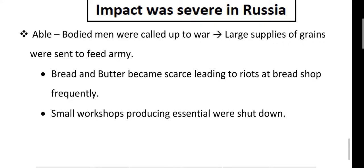Small workshops producing essential spares shut down due to the shortage of labour. This led to the disintegration of industries, and the condition of the Russian economy became worse. In summary, this was the impact of the First World War on the Russian Empire: military casualties, refugee crisis, industrial disintegration, labour shortage, and food scarcity.